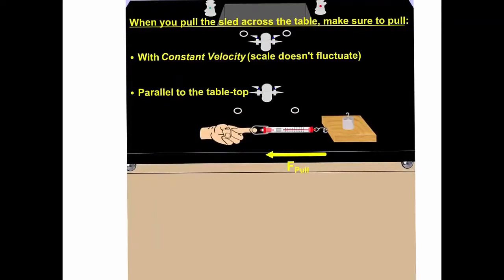It's critical that you understand how to pull the sled in order to generate the friction. Number one, you want to pull slow and steady with a constant velocity. And number two, you want to pull parallel to the tabletop.